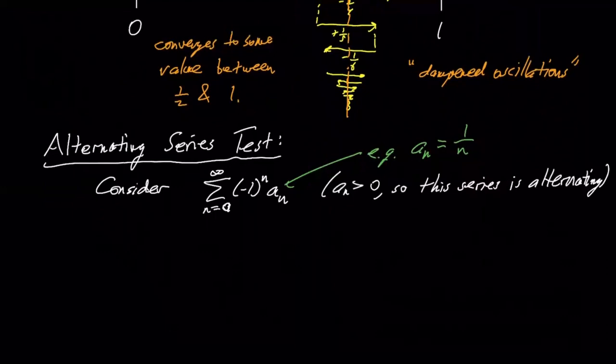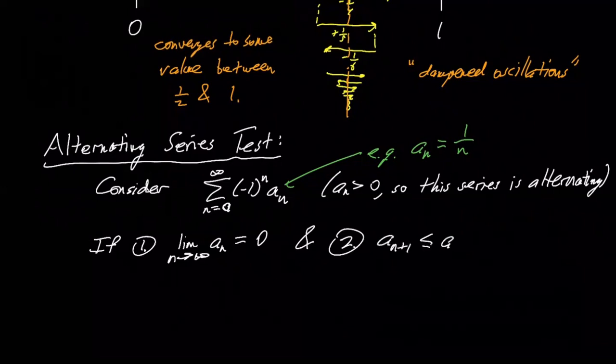So there's two conditions and these are conditions satisfied by the example above. If, one, the a sub n are dying off, getting smaller and smaller, so the limit is zero. And two, each term is getting smaller than the previous term. Right, actually I should make that a strict less than. Each term is going to be smaller than the previous term. So the n plus first term is less than the nth term.